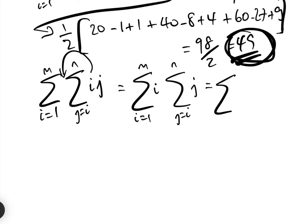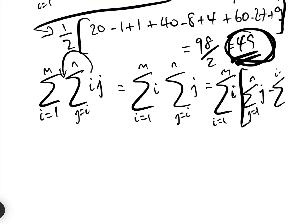We're going to do the same trick as before: the sum from i equals 1 to m of i times the sum from j equals 1 to n of j, minus the sum from j equals 1 to i minus 1 of j. All I've done is split the sum from j equals i to n into the sum j equals 1 to n, minus j equals 1 to i minus 1.